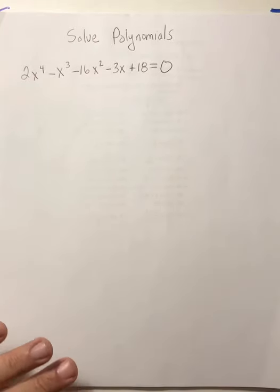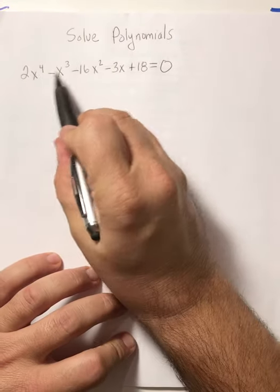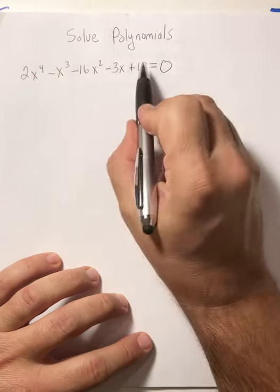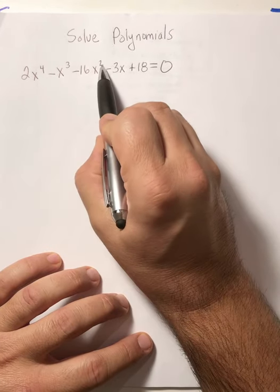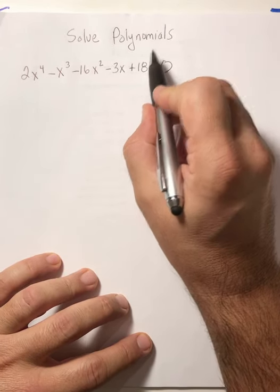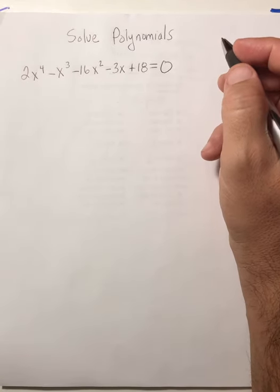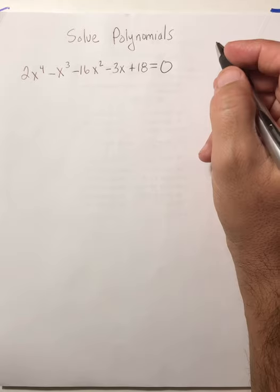All right, pre-calculus fans, today we're going to look at solving polynomials. We're going to look at how to solve this fourth-degree equation. Remember, a fourth degree: 4, 3, 2, 1, and then there's x to the power of 0 here that we don't need to see. In order for us to solve a polynomial, we're going to do this by synthetic division.